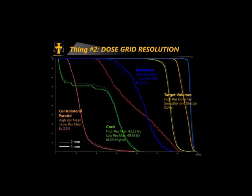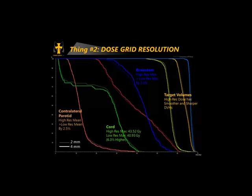This affects DVH. Here is the exact same plan — same monitor units, same segments — calculated at 2 different resolutions, and we see big changes in the DVHs. Look at the brainstem: the high-resolution max dose was greater than the low-resolution max dose by 3.5%. With the cord, max dose is 6.3% different — with high resolution being higher. Always with smaller grid spacing, you better map the maxes, the mins, and everything is more accurate.